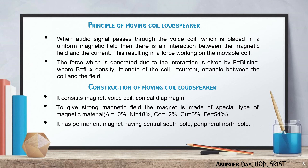The force on the coil due to the interaction between the current through the coil and the magnetic field is given by F = BLI sinα, where F is the force, B is the flux density, L is the length of the coil, I is the current in amperes, and α is the angle between the coil and the field. Generally we consider α = 90°, so F = BLI.